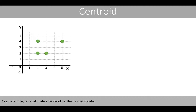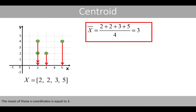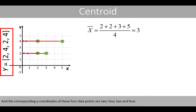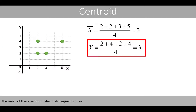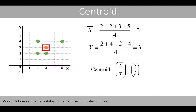As an example, let's calculate the centroid for the following data. The x-coordinates for these four data points are 2, 2, 3, and 5. The mean of these x-coordinates is equal to 3. The corresponding y-coordinates of these four data points are 2, 4, 2, and 4. The mean of these y-coordinates is also equal to 3. We can now define our centroid as the mean vector, and plot it as a dot with x- and y-coordinates of 3.